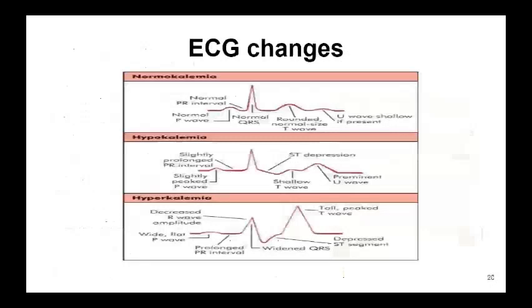The last part of the session covers ECG changes in disease states of potassium. In hypokalemia, the ECG shows a slightly peaked P wave, a slightly prolonged PR interval, ST depression, and a shallow T wave. In hyperkalemia, there is a wide flat P wave, prolonged PR interval, widened QRS complex, a slightly depressed ST segment, and a tall peaked T wave. The change in plasma potassium has a pull-and-push effect on the ECG curve — pull effect in hyperkalemia and push effect in hypokalemia.